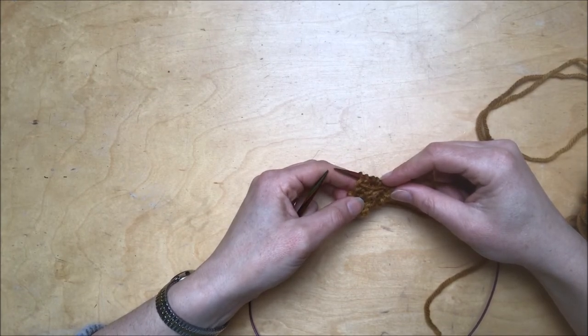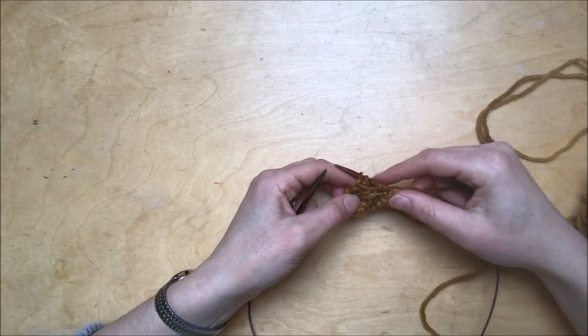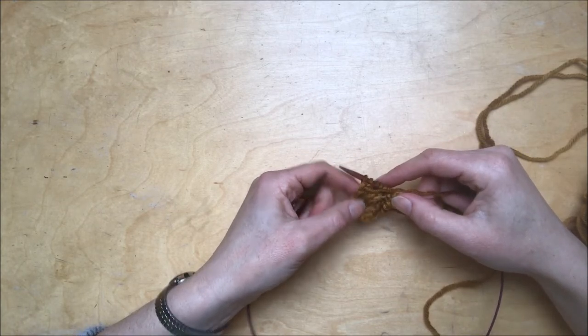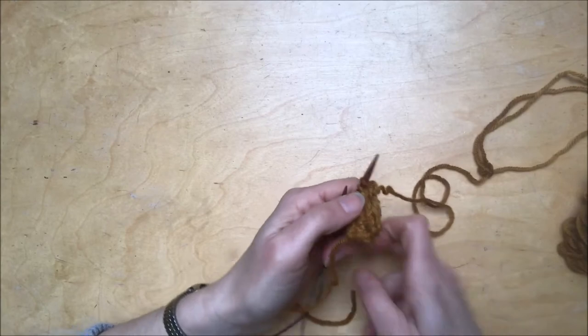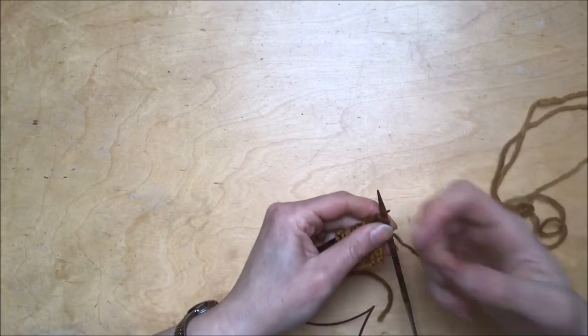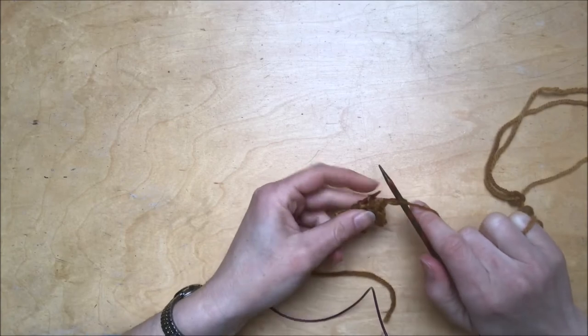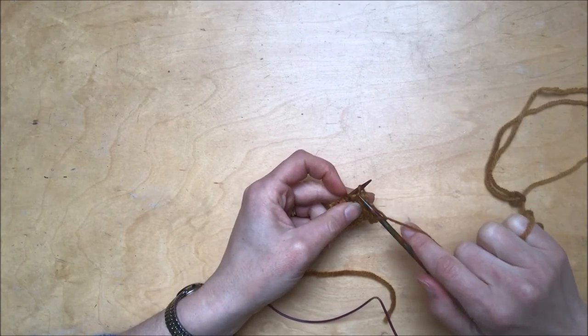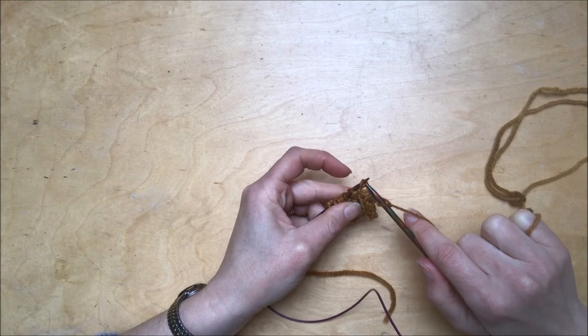Now the problem that it can give you, if you're not used to reading your knitting, is when you come back to work it on the next row it's going to have your stitch mounted backwards. So I'll work the first stitch here, then the next one you can see it's mounted backwards. So this should be the front leg of my stitch.